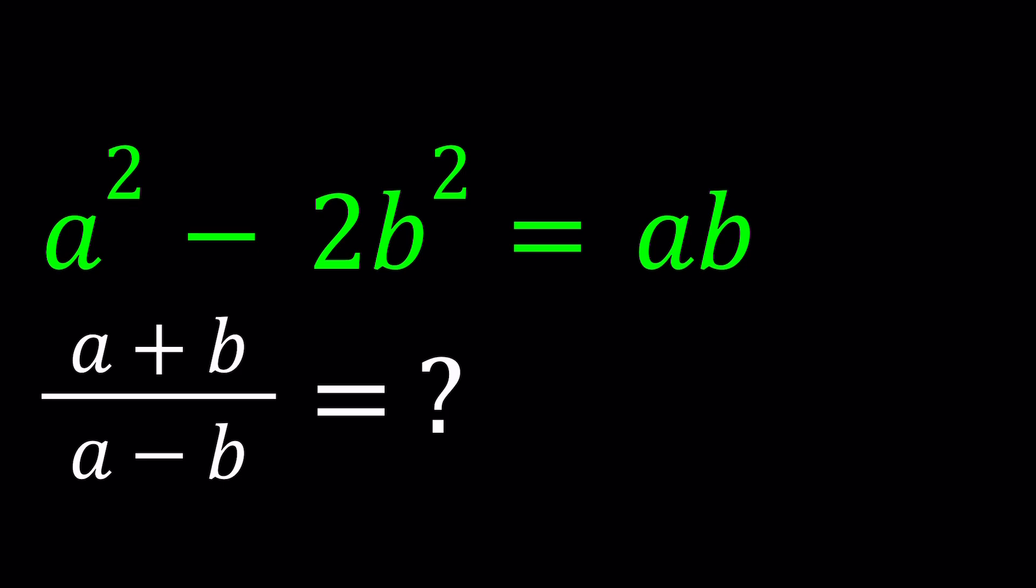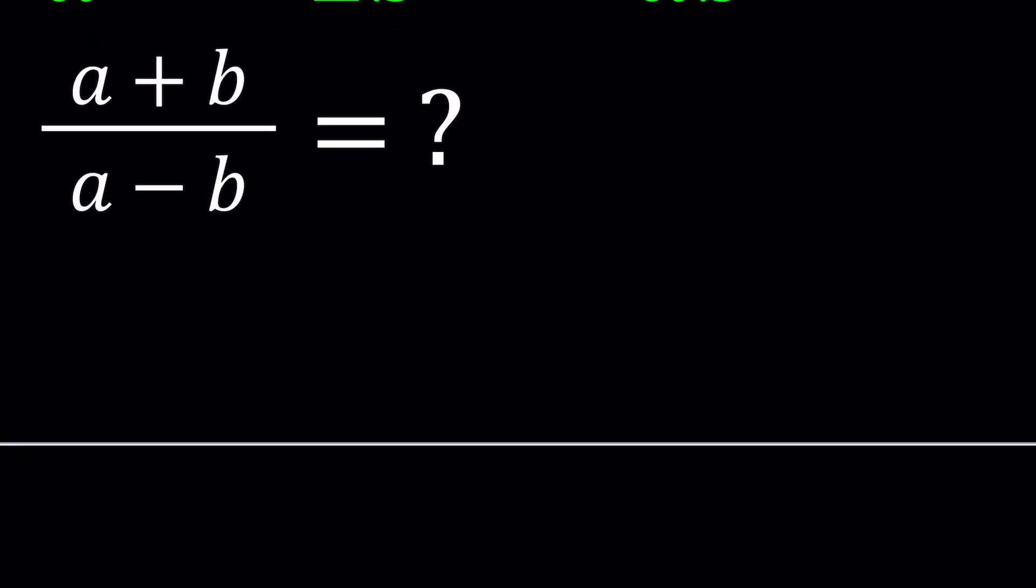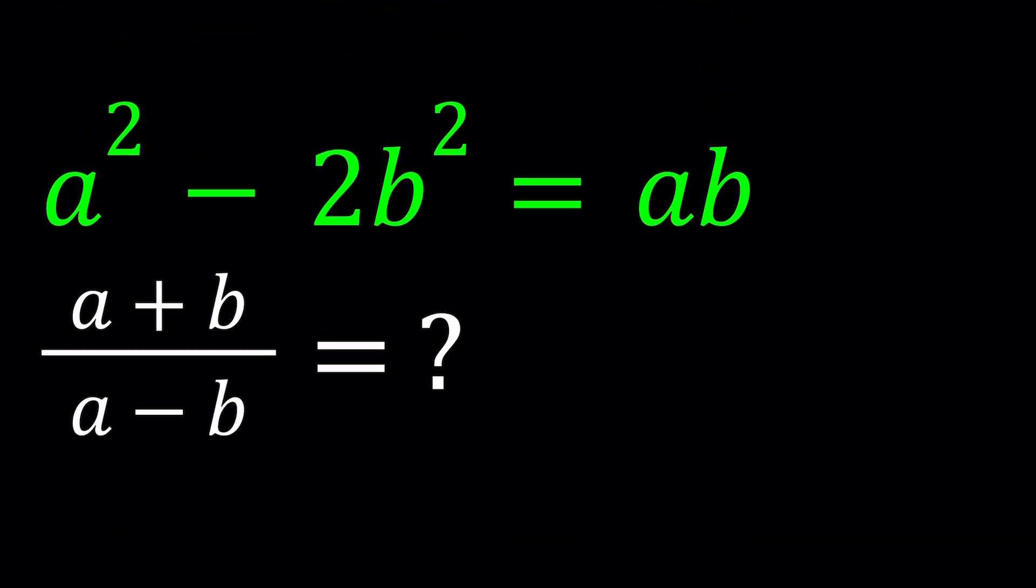We have a² - 2b² = ab, and we're going to evaluate (a+b)/(a-b). So we're going to find a numerical value for this equation, even though our equation has two variables. Let me go ahead and present the first method.